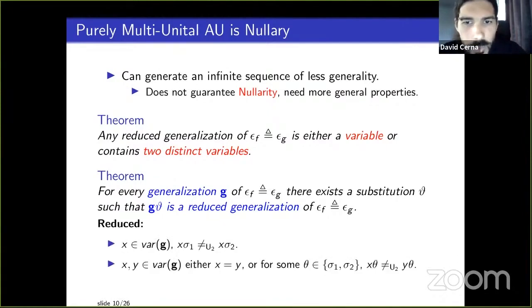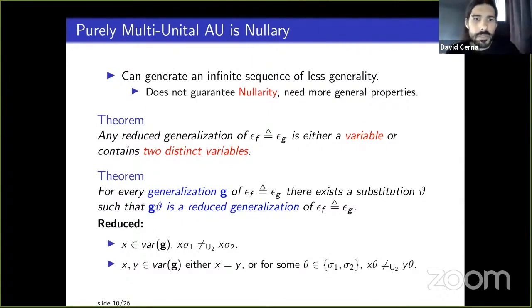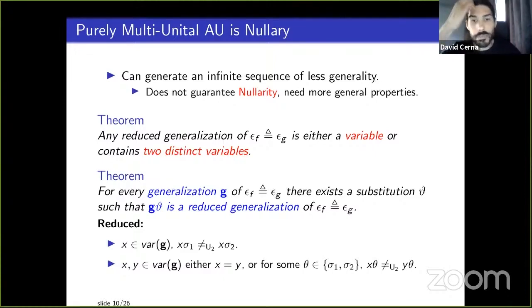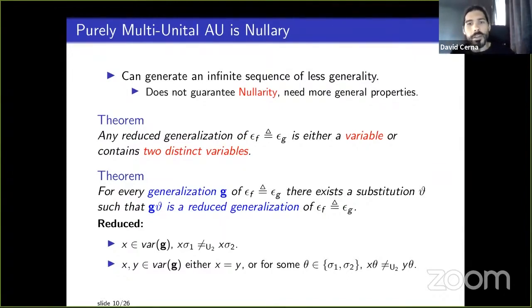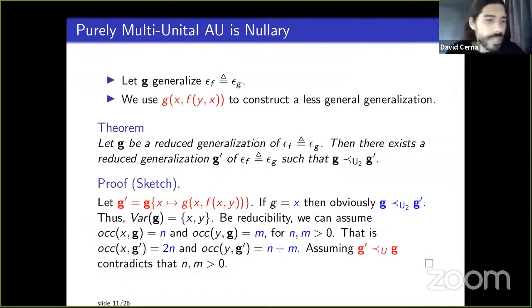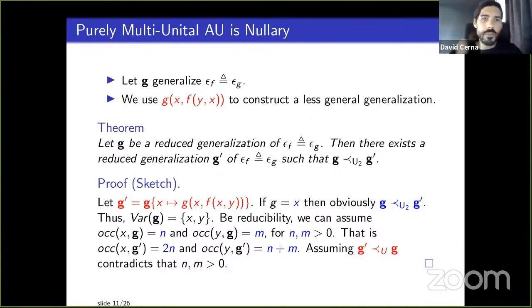A reduced generalization forces properties on the substitutions: two variables in the generalization cannot be matched to the same value — σ1(x) cannot equal σ2(x). Also, for each pair of variables, they're either the same variable or differ on some σ1 or σ2. In this elementary language, substitutions can only really be ε_f or ε_g — any more complex terms cannot be substituted, as discussed in the paper.